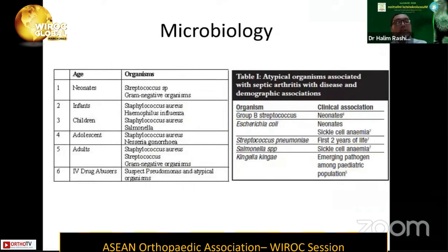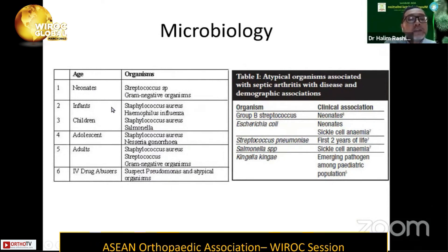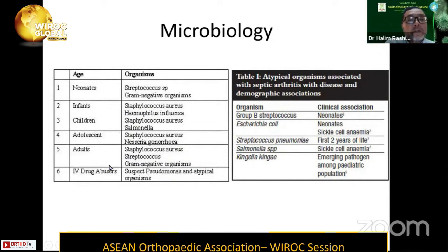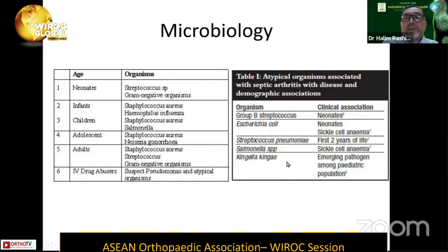In terms of microbiology, based on the age, you can have different types of organisms, but mainly we are dealing with gram-positive organisms. In neonates, Streptococcus is more common; as the child gets older, Staphylococcus aureus starts to come in. Haemophilus influenzae used to be common previously but is slowly being eradicated following vaccination programs. Atypical organisms start to come in for IV drug abusers or patients with sickle cell anaemia. Nowadays people are also talking about Kingella kingae as an emerging pathogen in the paediatric population.